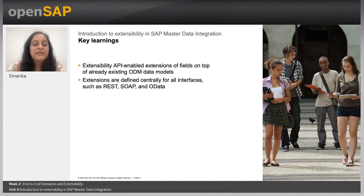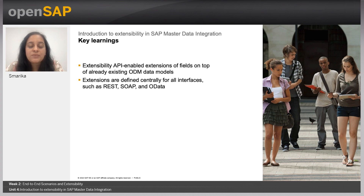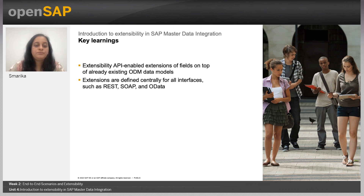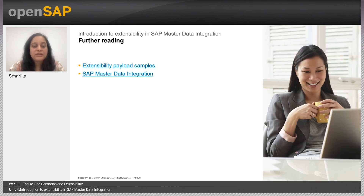Key learnings: the extensibility API enables extensions of fields on top of already existing ODM data models, and extensions are defined centrally for all interfaces such as REST, SOAP, and OData with the new extensibility API. Further readings are available: one link covers extension payload in different scenarios, and another covers SAP Master Data Integration. Thanks for listening and see you in the next unit.